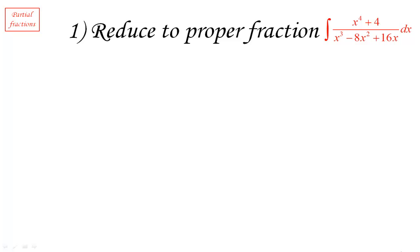So let's see how we reduce a fraction, a rational function to proper fraction. For instance, we're going to look at this particular example where on the top we have a polynomial of degree 4 and on the bottom we have a polynomial of degree 3. So the degree on top is greater than the degree on the bottom, we don't want that.